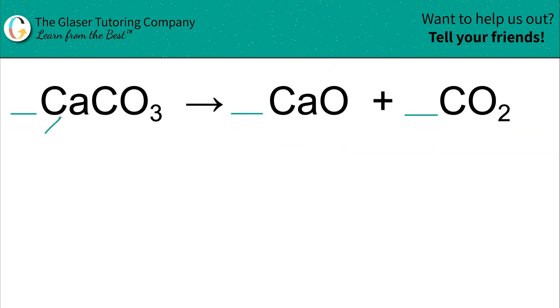So let's just start with the first element that we see. I have calcium. The subscript of calcium is a one. That means I have one calcium on the left, and I also have only one calcium on the right. So that's balanced.